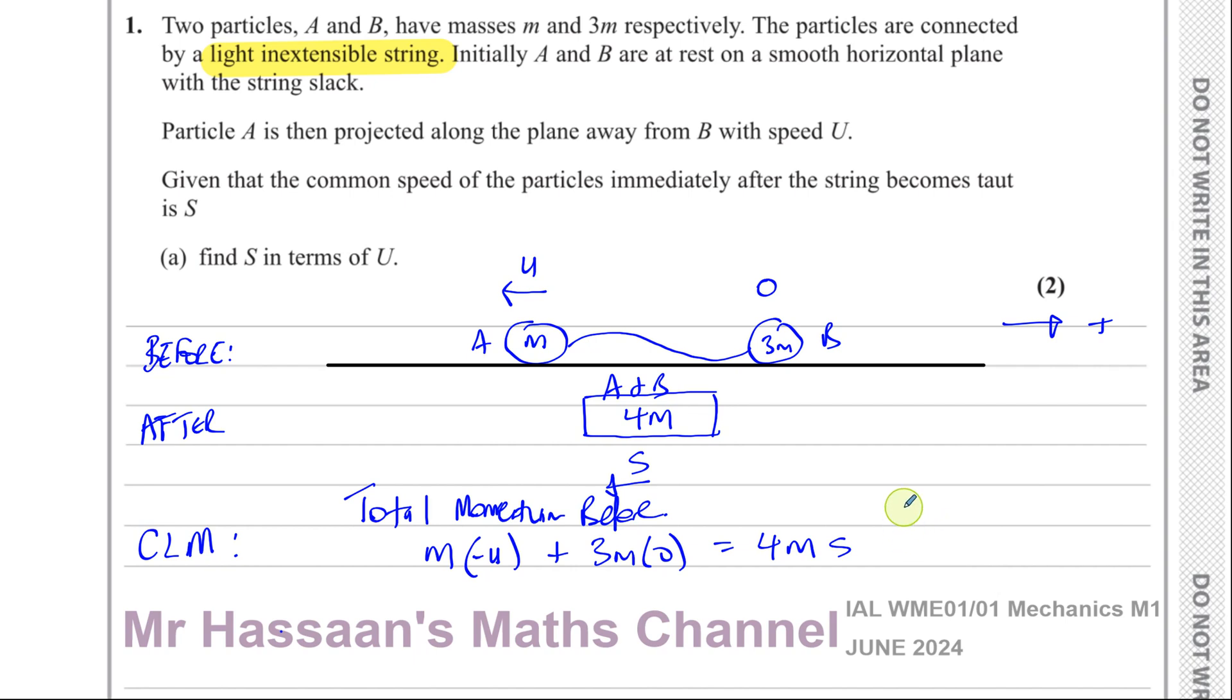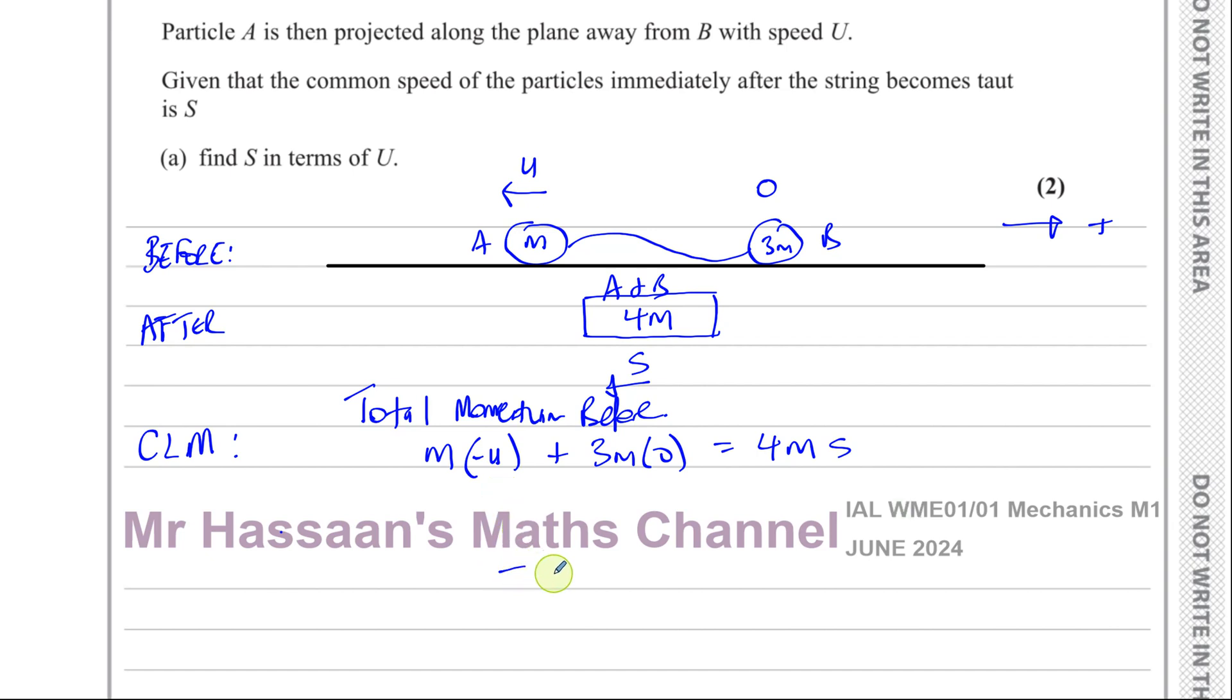This gives us minus MU equals 4MS. And this U is actually a capital U. Let me just be a bit careful about that. That's a capital U. Make it clear that it's capital. Over here as well. It's M times capital U. Minus M times capital U. So now we can say that the M's cancel. So we're left with minus U over 4 equals S.